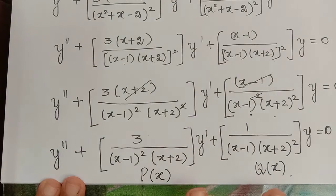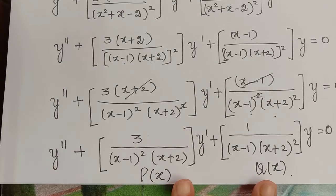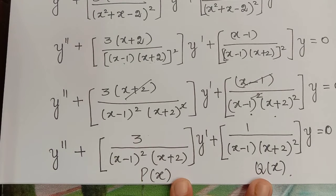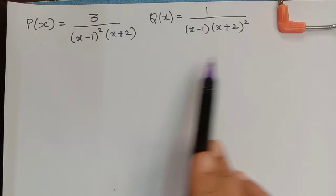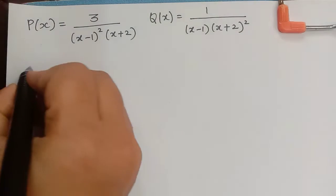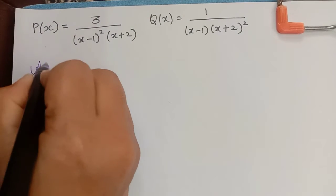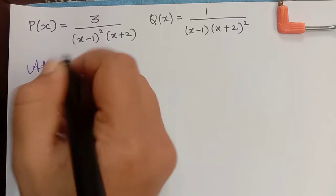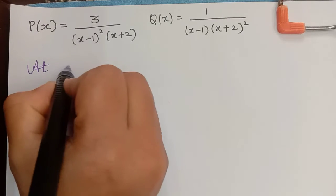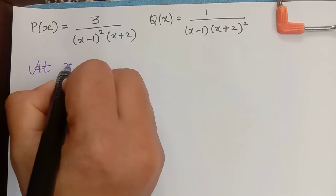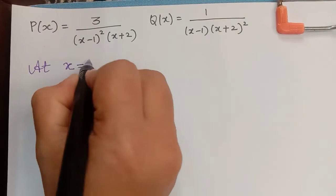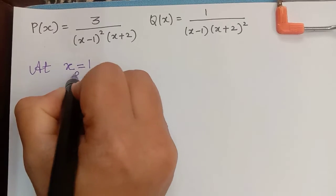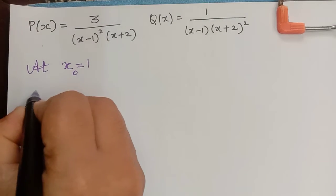Now if we look at this, this is p(x) and this is q(x). So now let us check whether p(x) and q(x) are analytic or not. I have taken p(x) and q(x) and written here. First we shall check the nature of the singular point at x₀ = 1.